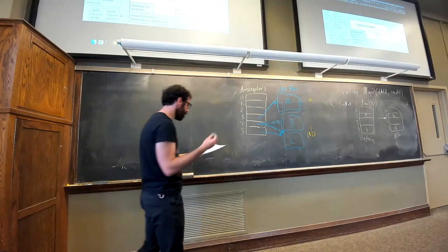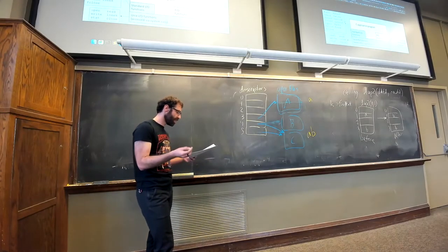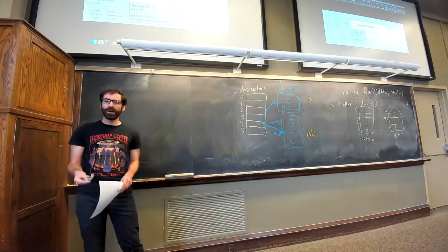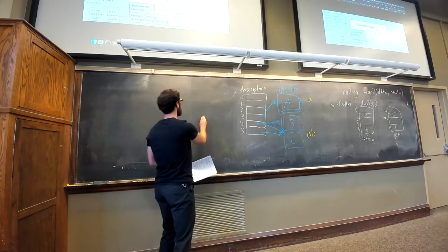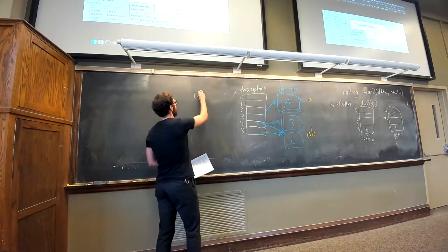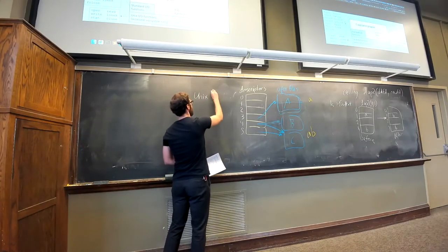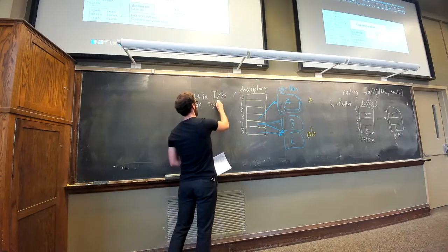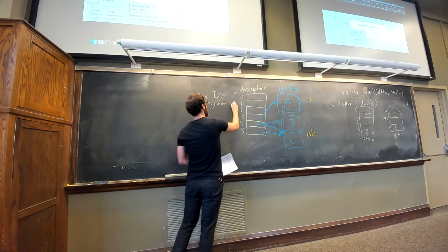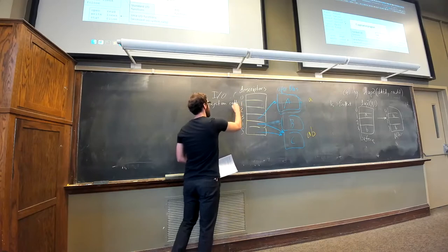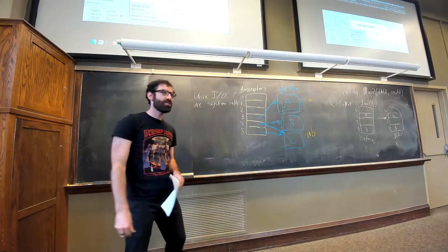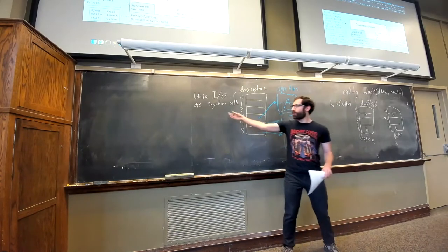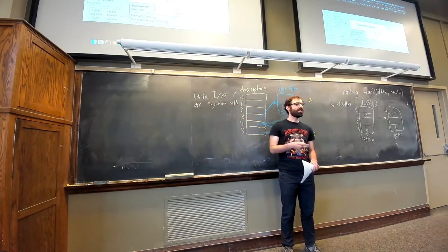An important thing about this picture is that Unix IO functions are system calls. Can anyone remind us what a system call means?